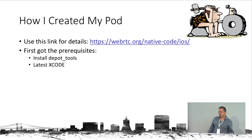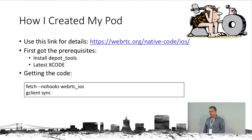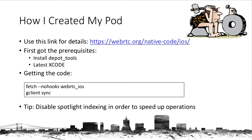First you get the prerequisites — install depot tools and get the latest Xcode. Then you fetch the code using the fetch command, specifying you want WebRTC iOS, and run gclient sync. That's it — you have the WebRTC code on your computer. It's important to disable Spotlight indexing on the directory where you get it, because the build takes a long time and disabling Spotlight makes it a little faster.